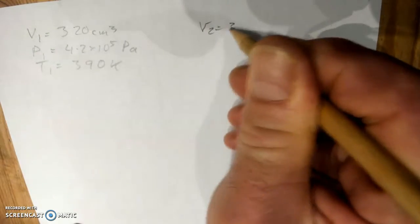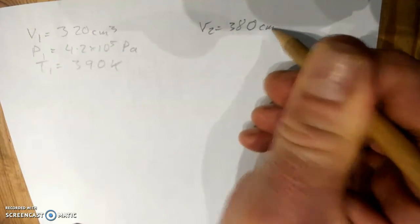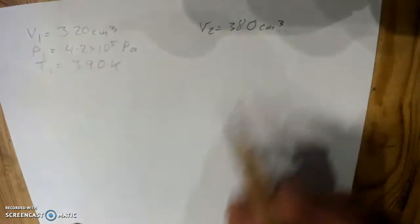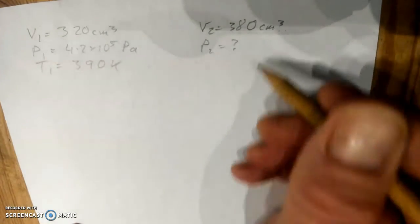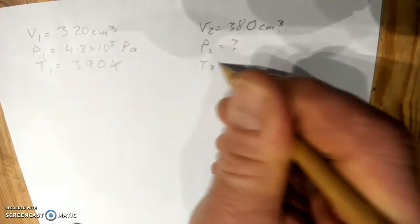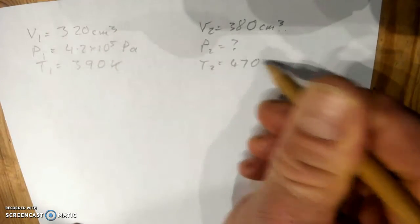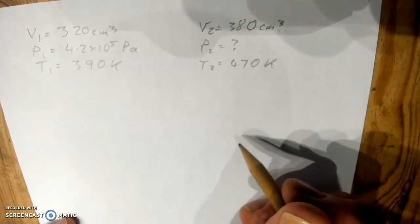And then after the event we've got V2 is 380 cubic centimeters. Again, checking the units are consistent, can leave that there. The second pressure is the unknown, so P2 is a question mark, and then T2 is 470 Kelvin. Again, it's in Kelvin, don't need to change the units.